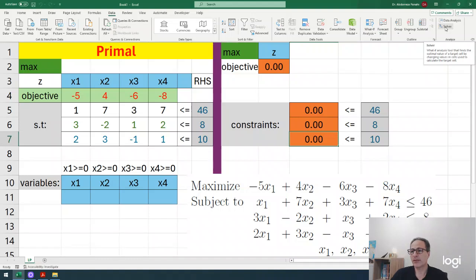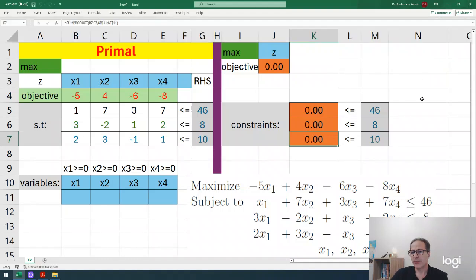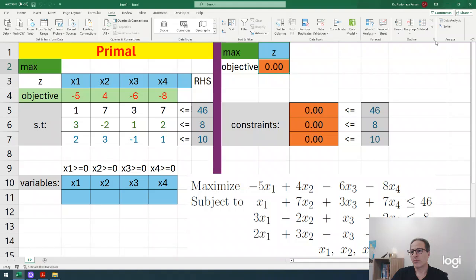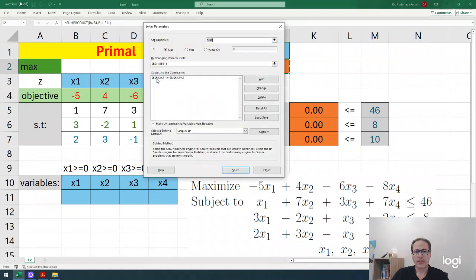Now I click on Solver. Before clicking, it's better to select this cell because our objective is maximizing z value saved in J2. Even if you didn't select it, you can change it later. Since I solved once, you see the formulas here. If you open this file, you'll see this information. For now, I reset all and start from scratch.